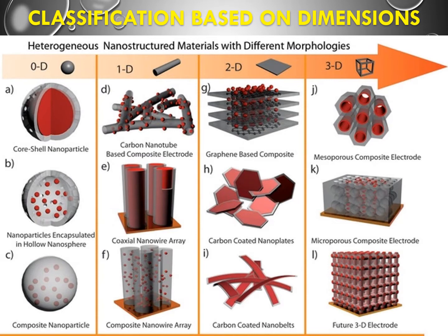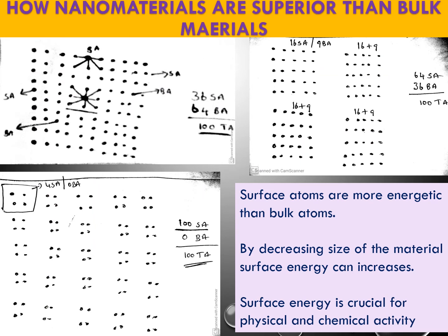Examples: nanoparticles and quantum dots fall into the 0-dimensional category. Carbon nanotubes and carbon nanowires are 1-dimensional nanomaterials. Graphene sheets and layered sheets come under 2-dimensional materials. Composite materials come under 3-dimensional materials. The origin of nanotechnology and why nanomaterials are superior to bulk materials is explained in another video.